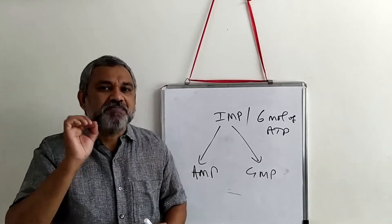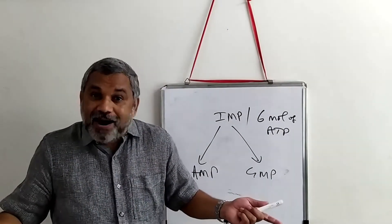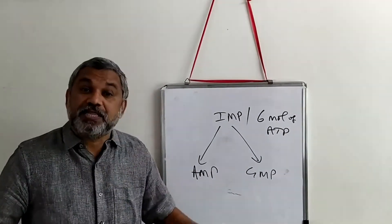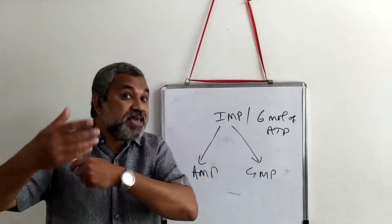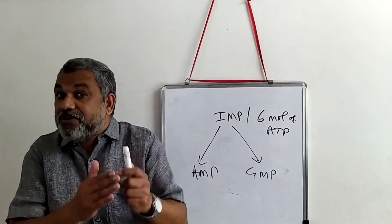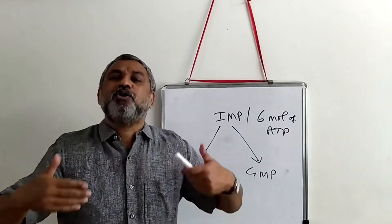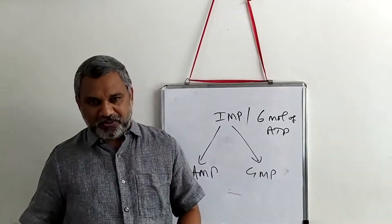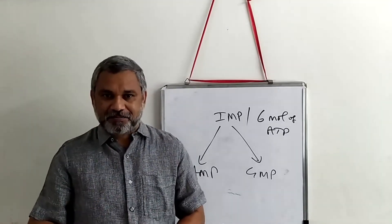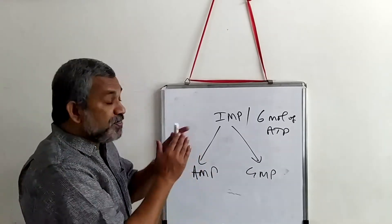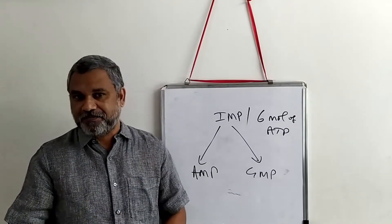Regulation is critical because the concentration of adenylate must match that of guanylate and thymidylate. If any nucleotide is present beyond the cell's requirement, it could be incorrectly incorporated into DNA, causing mutations in genetic material. Therefore, there is very stringent regulation of nucleotide synthesis.